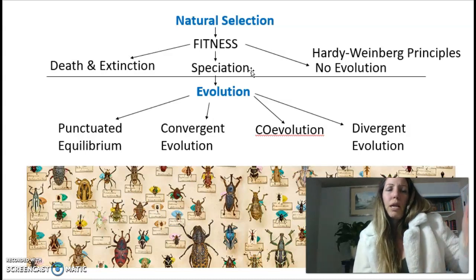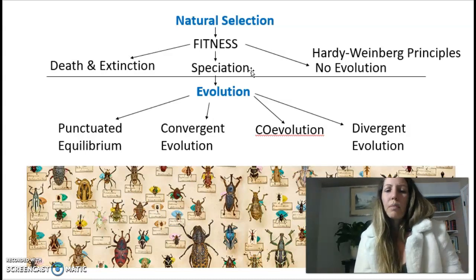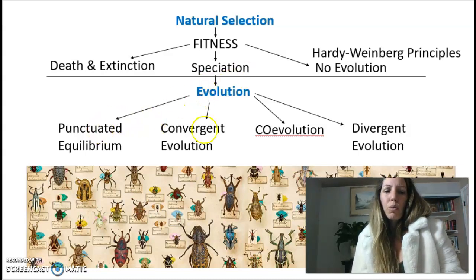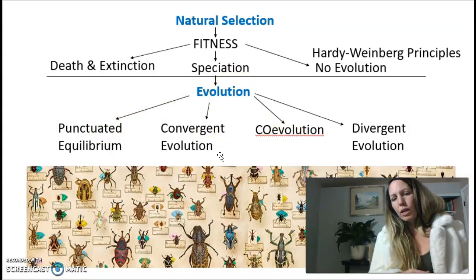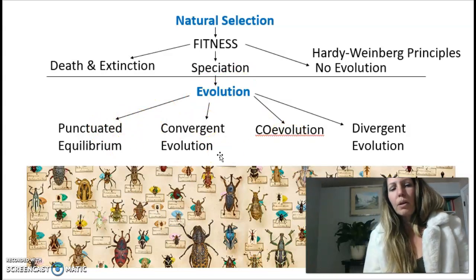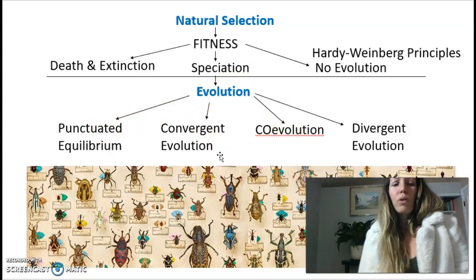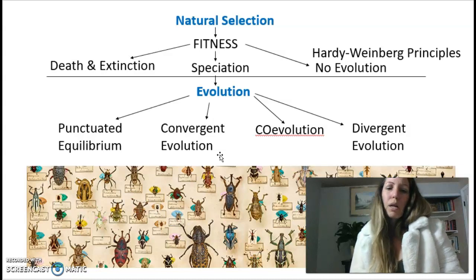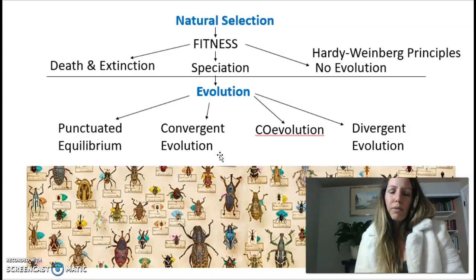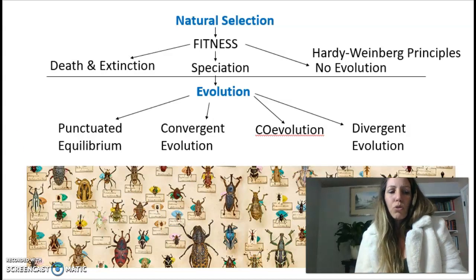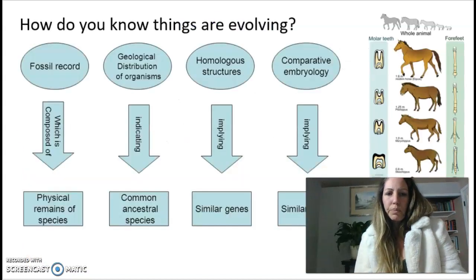And that is evolution — it's change over time. With evolution, what we're going to be looking at today is the different types of evolution that can actually happen: whether it's punctuated, convergent, co-evolution, or divergent evolution — how do we go about evolving?